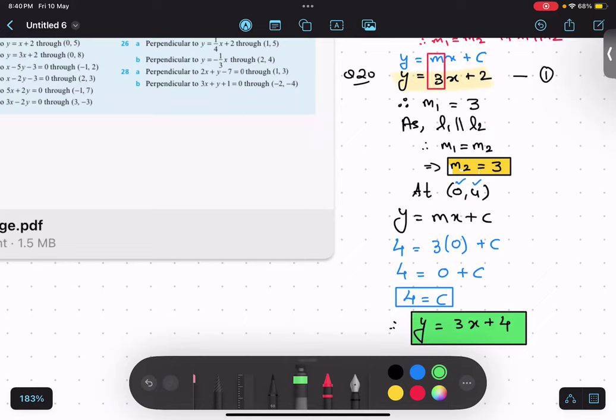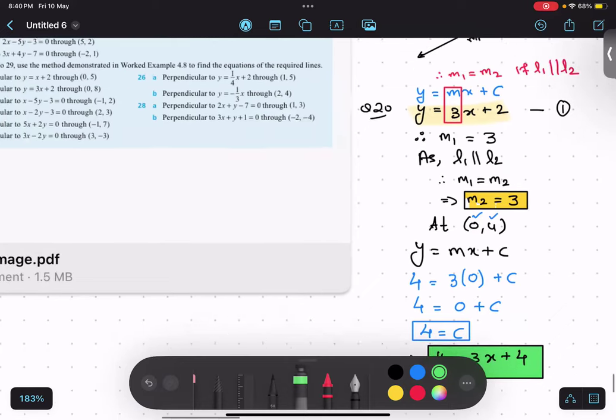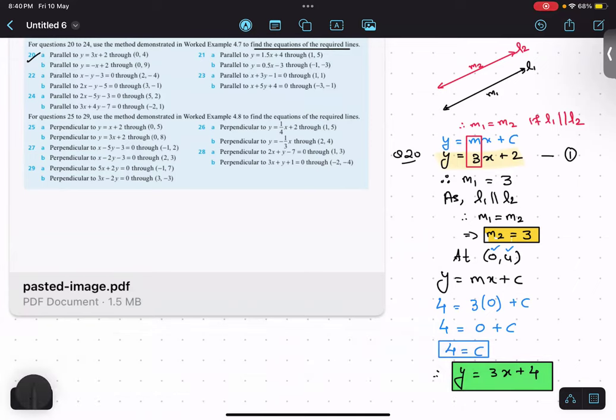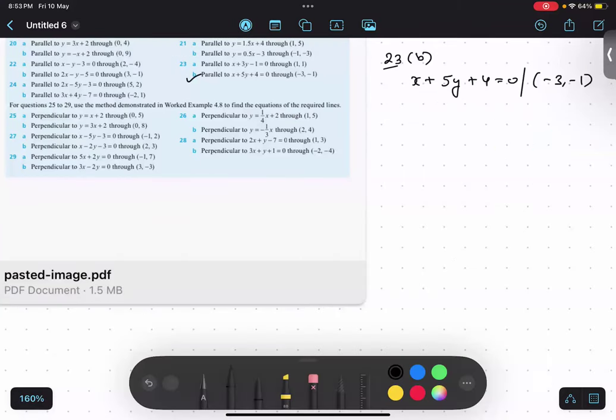So quickly copy this thing and do one more part. I did 20th question part A. What you can do is after noting down this thing, you can do this 21st question part B. Quickly copy this thing. Now, always remember the first step is write the equation in the form of y equals mx plus c. So over here, this particular equation, I will keep this 5y on the left hand side and rest of the things on the right hand side. So it will be minus x minus 4.